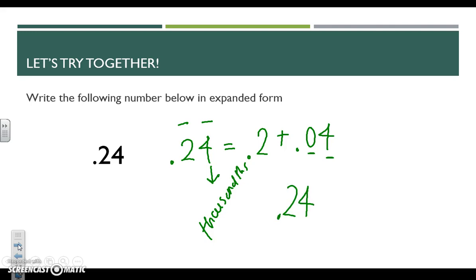So again, breaking down 24 hundredths in expanded form, keep your 2 in the tenths place, you keep your 4 in the thousandths place, and you use a zero as a placeholder when needed.